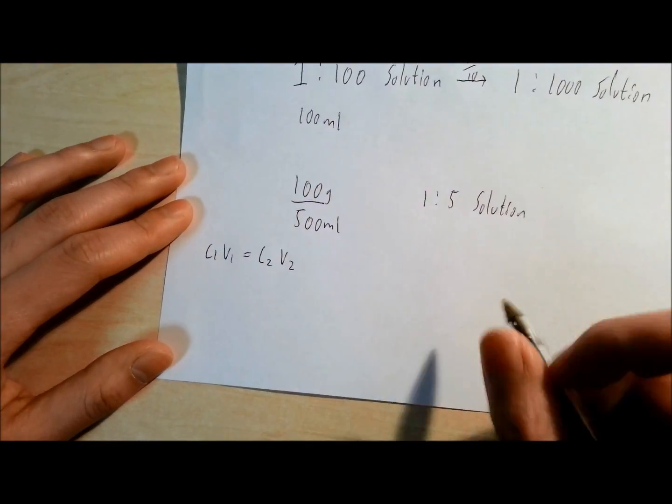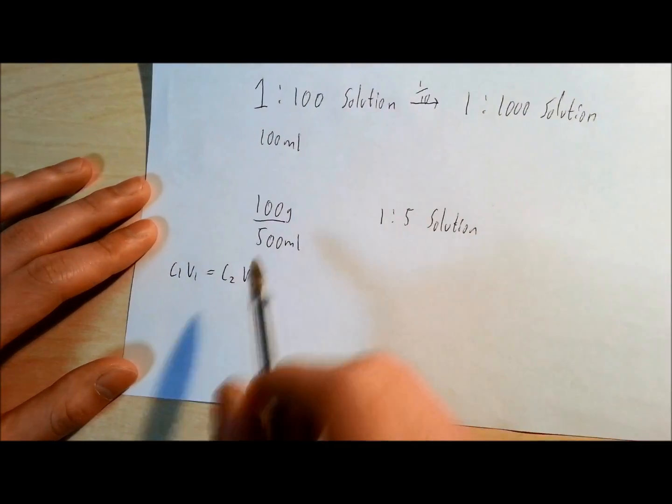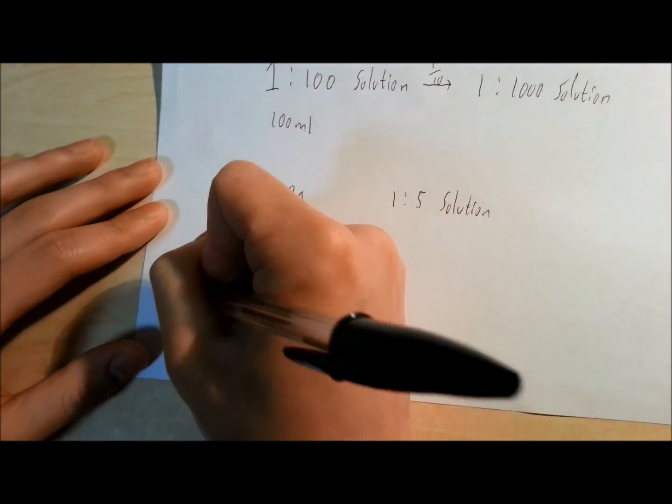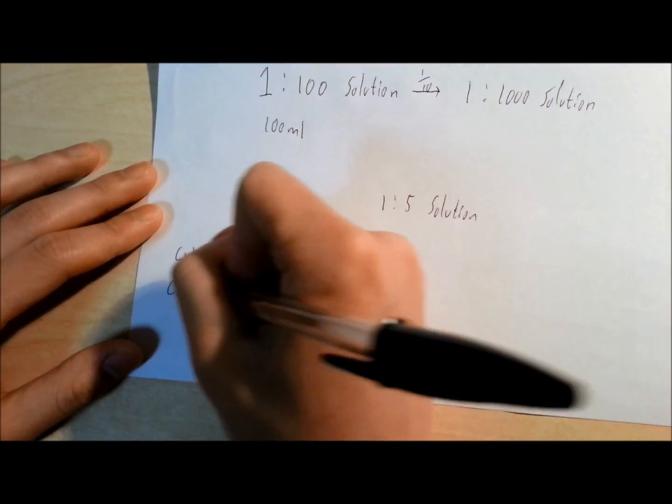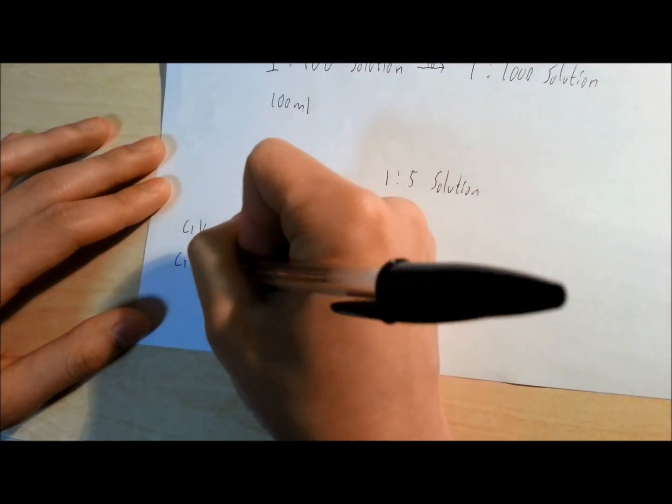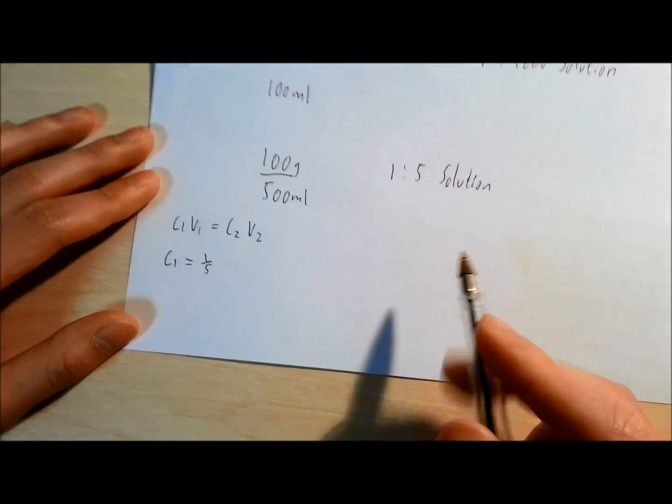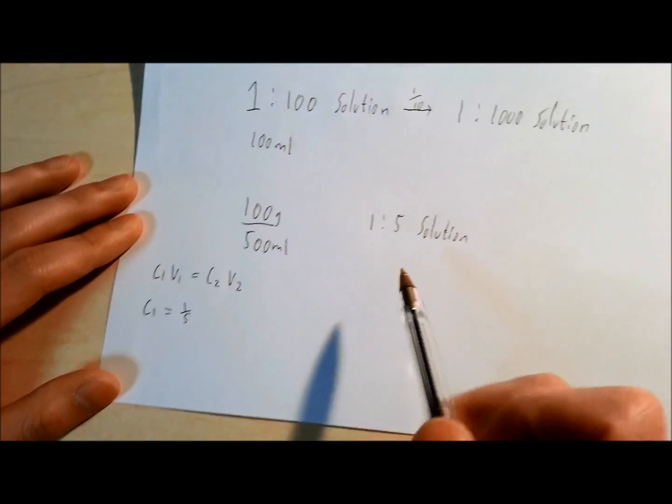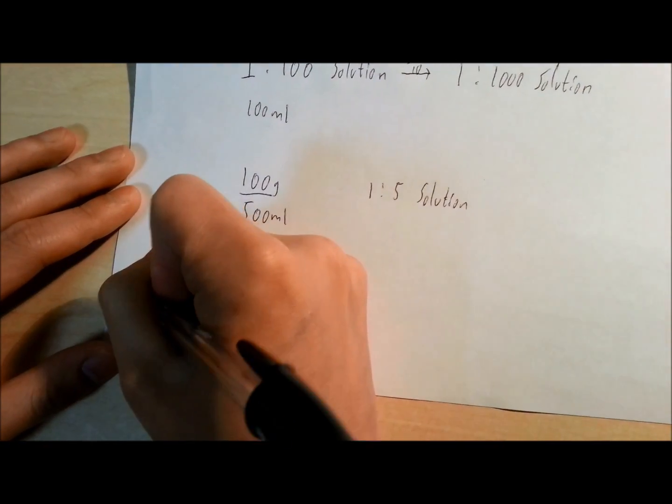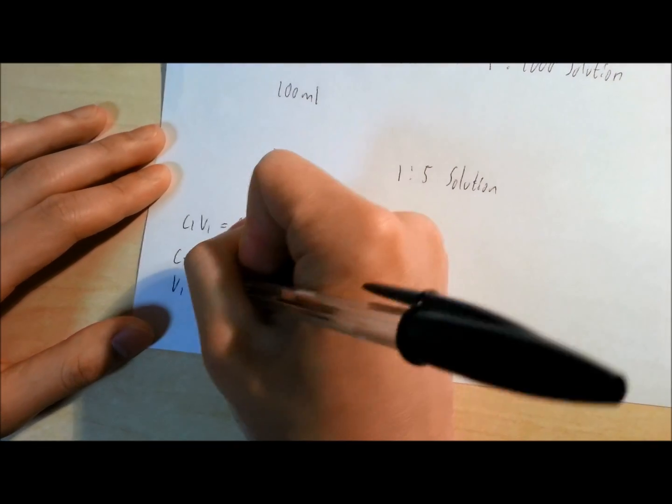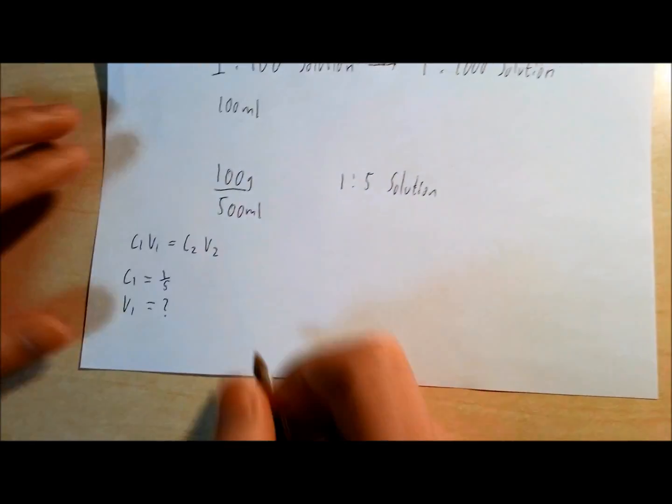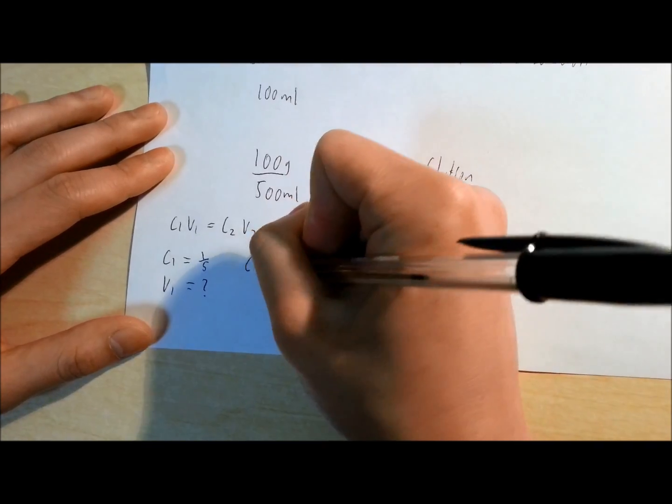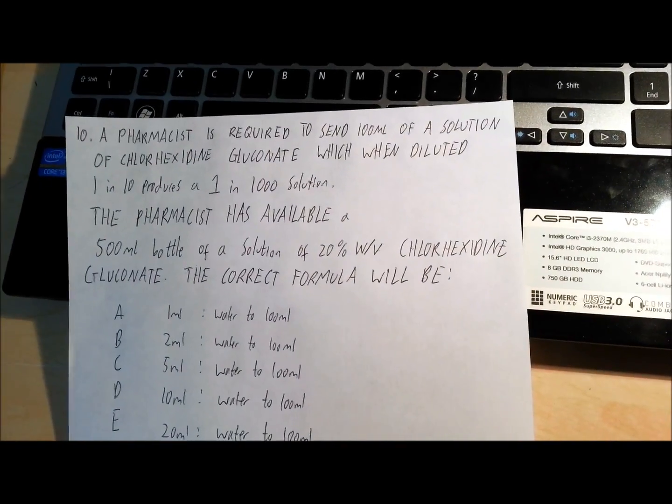Now C1 V1 is what we have in front of us. C1, the concentration is 1 in 5, so I'll just say the concentration is 1 over 5. And how much volume of that do we need, we don't know. What we do know is that our end concentration, as the question stated, has to be 1 in 100.